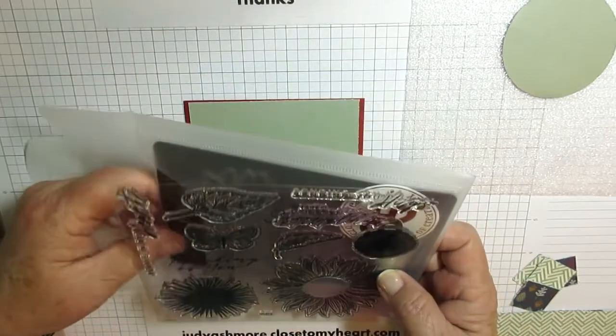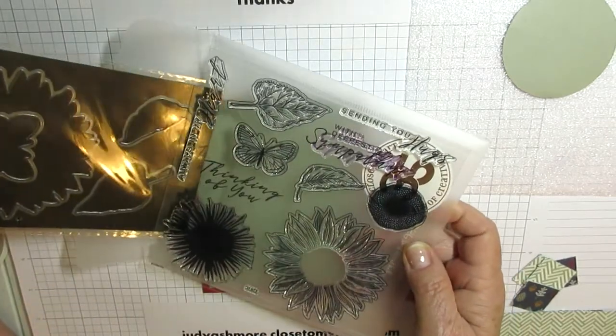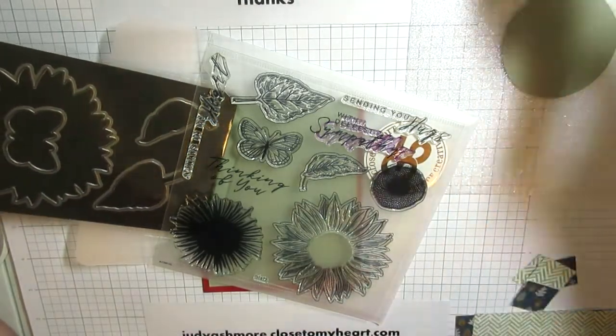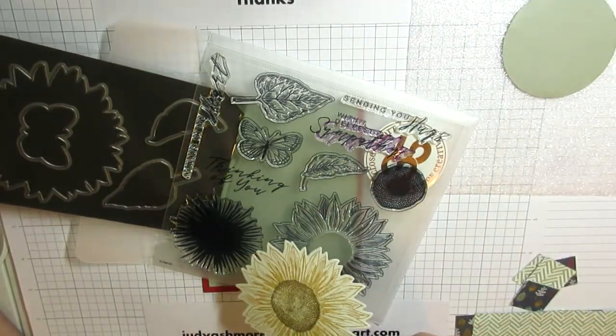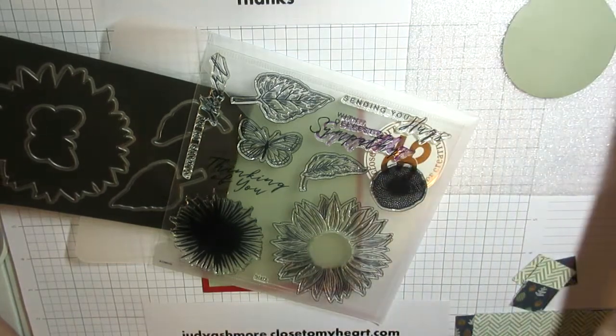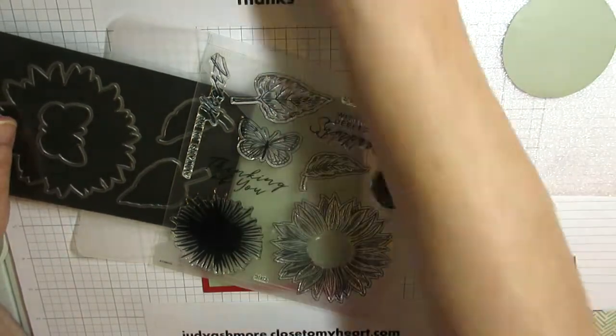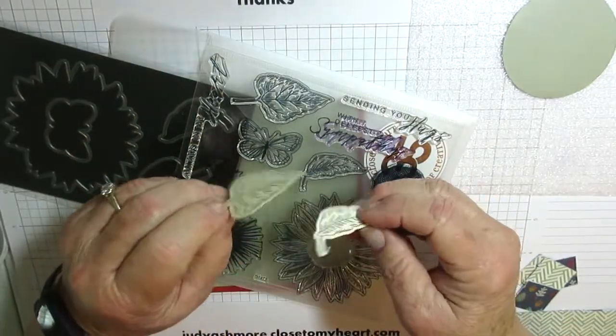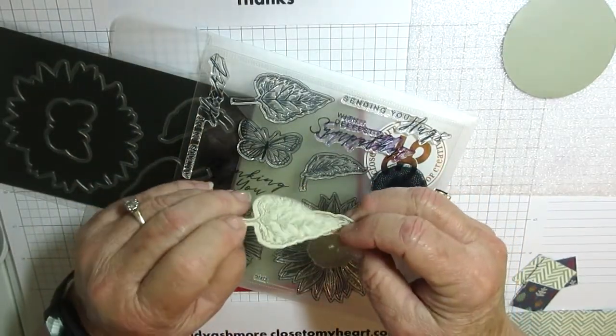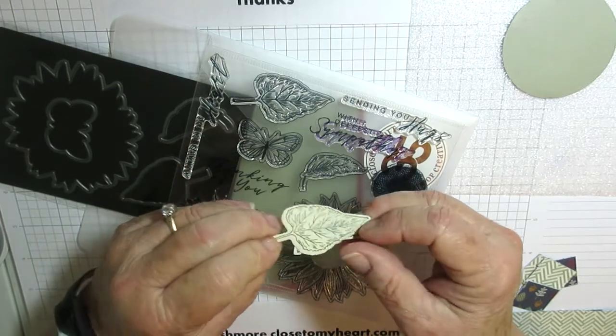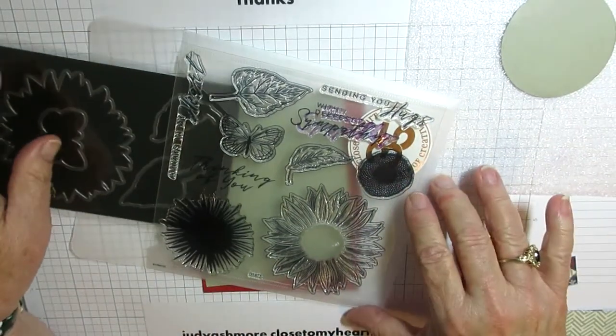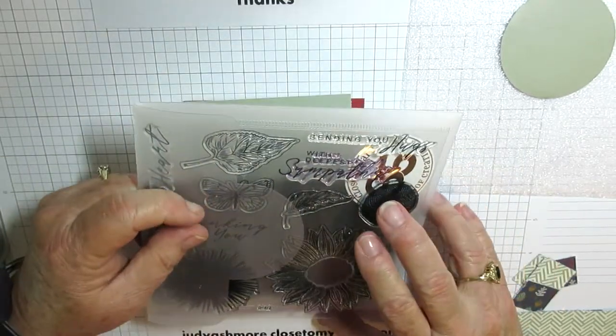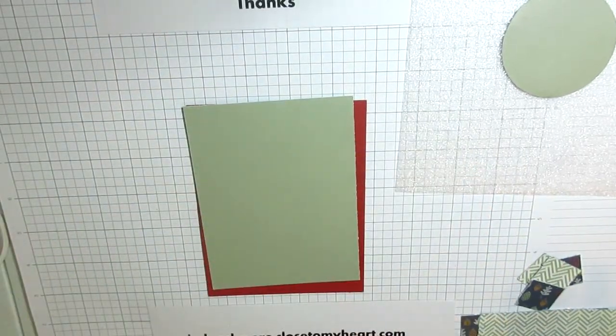It also comes with the thinlits, which means that you can cut out the sunflower. I did one the other day and colored it in. You can cut out the butterfly and two of the leaf shapes so that you can have easily shapes to put on a card or a scrapbook layout or project that you're doing. But this is D1872 available in the catalog.